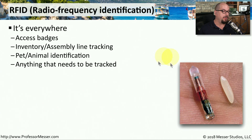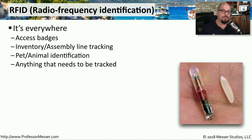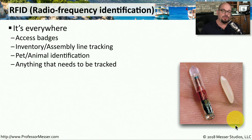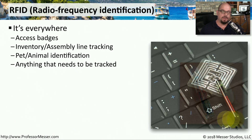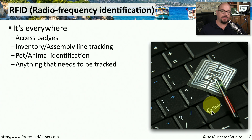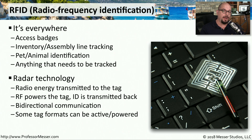A popular wireless technology found in access badges, animal identification, or anything that needs to be tracked is RFID — Radio Frequency Identification. These are very small tags that we can put in almost anything we'd like to track. Compared to a grain of rice, you can see how small RFID tags are. Some are flat, making them easy to embed in access cards. These RFID tags work using radar technology: RF energy is sent out, captured by the tag, and used to power it. The tag then sends out an ID signal which can be captured.